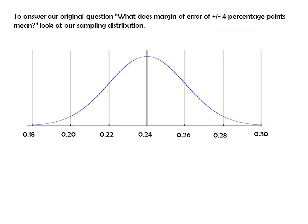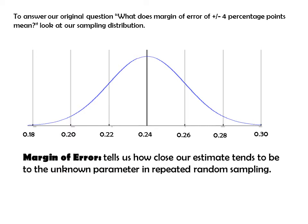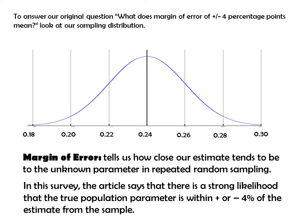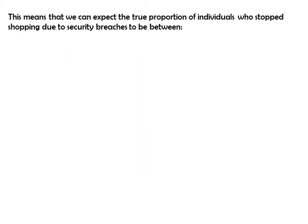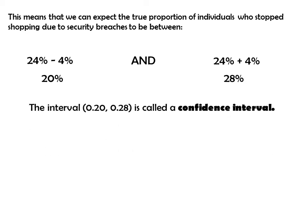So let's go back to our original question: what does margin of error, or plus or minus 4 percentage points, mean? Margin of error tells us how close our estimate tends to be to the unknown parameter in repeated sampling. This survey says there's a strong likelihood that the true population parameter is within plus or minus 4% of the estimate from our sample — so here's minus 4% and here's plus 4%. This means we can expect the true proportion to be between 20% and 28%. That interval, 20% to 28%, is called a confidence interval.